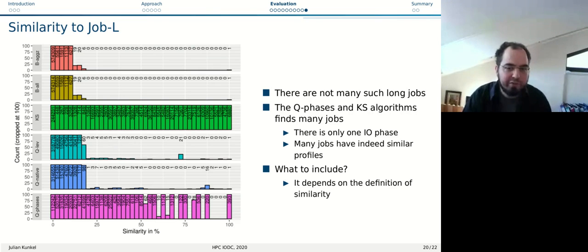For job L, the large job, we get only very few jobs that have a high similarity. Most similarity is less than 25%. Kolmogorov-Smirnov here is not achieving any good results because the profile is so flat - most values are always zero - that it doesn't yield good results. We have more than 6,000 jobs actually that are more than 97% similar. In terms of the phases algorithm, that also captures a lot of jobs that are similar because we have just one I/O phase. Generally speaking here, we find with this Q-native and Q-Lev algorithm some jobs that have sufficient similarity while they have a similar length.